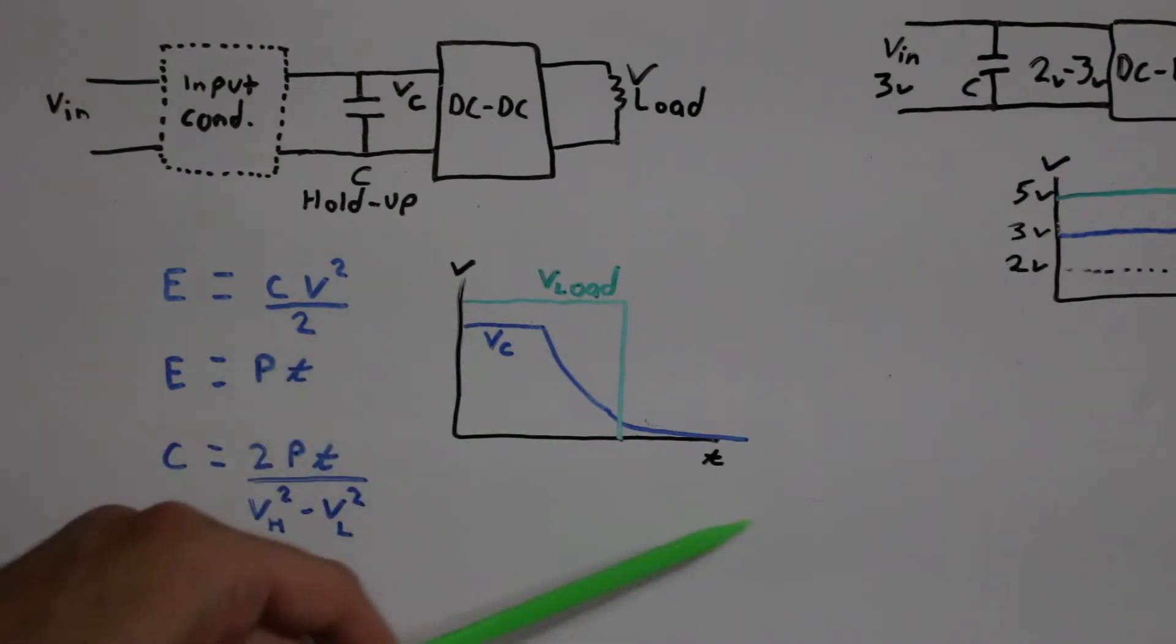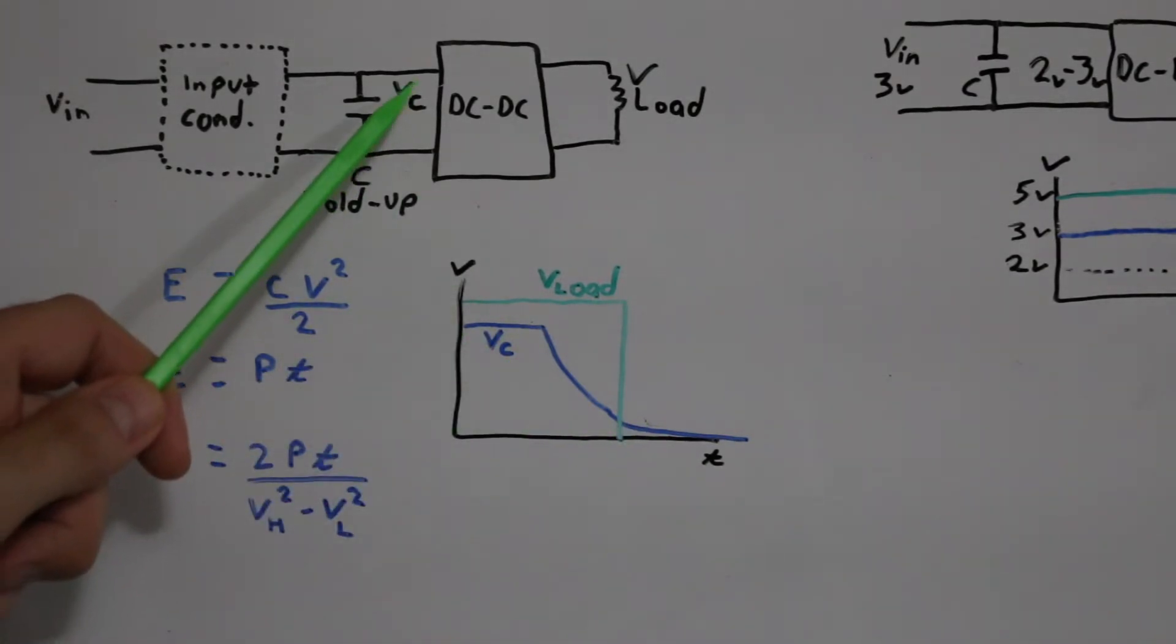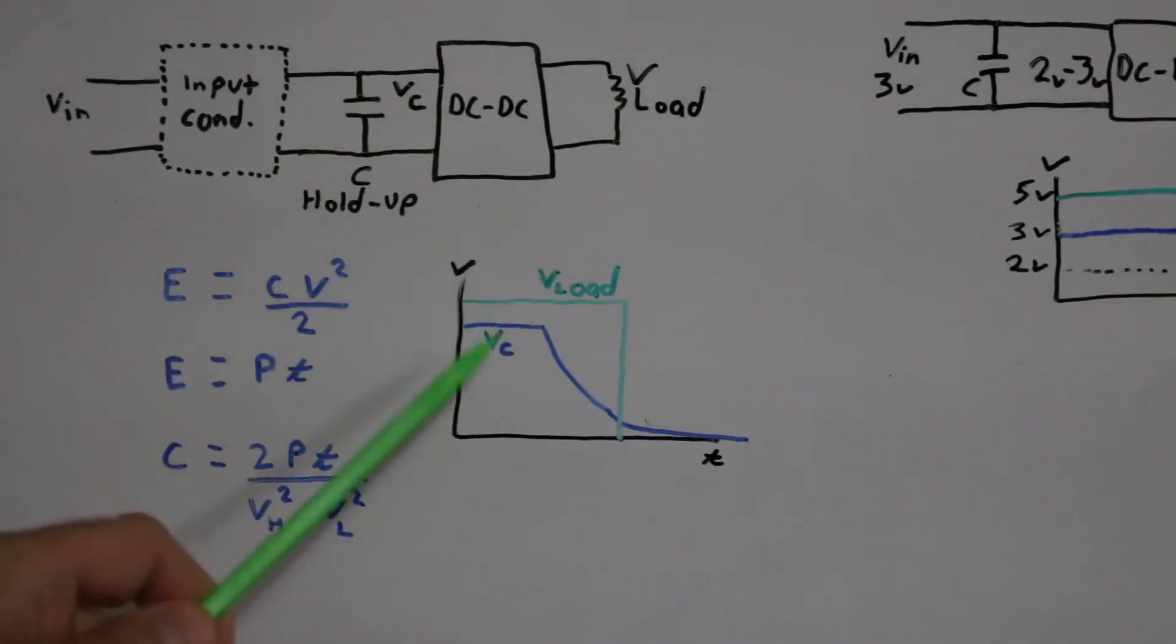So on this voltage versus time graph, the voltage on this holdup capacitor, which is delivering power to the load, would sit at a normal operating level. But when input voltage is lost, the voltage on the capacitor will gradually discharge.